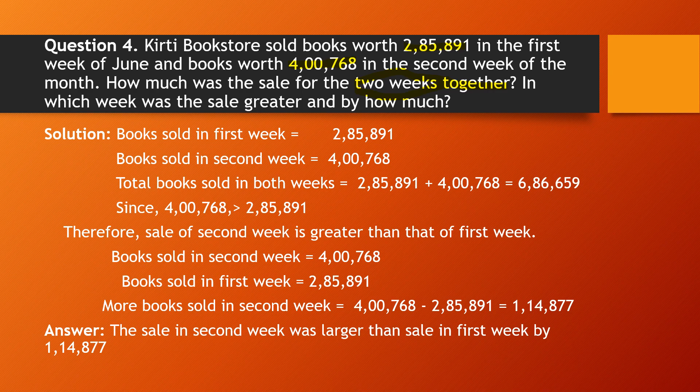Books sold in the first week = ₹2,85,891; books sold in the second week = ₹4,768. To find the total, we add both: 2,85,891 + 4,768 = ₹6,86,659 total books sold in both weeks.